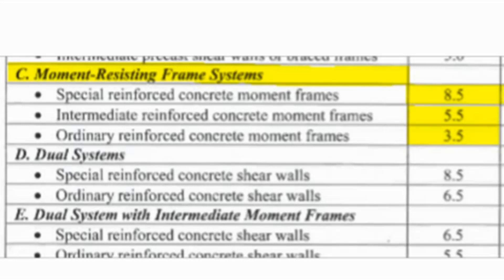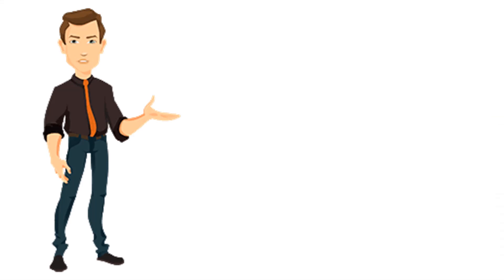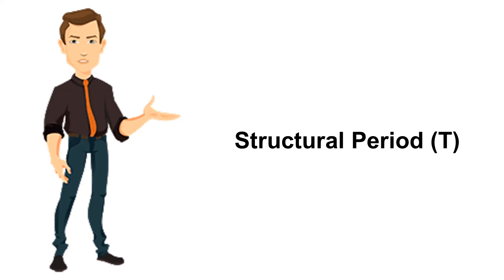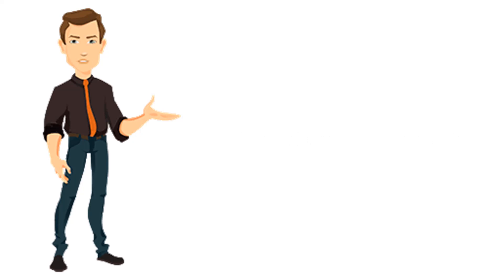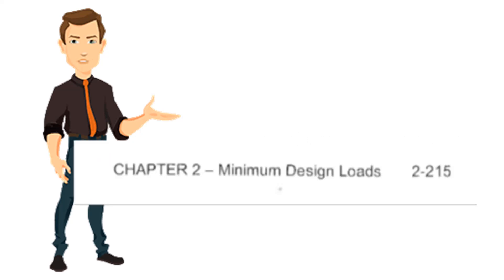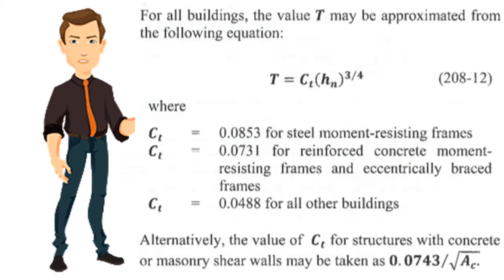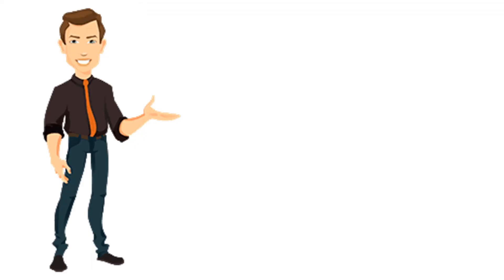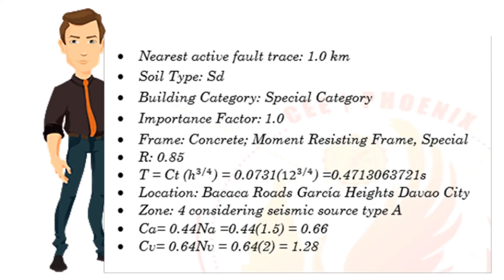Lastly, identify the elastic fundamental period of vibration T in the direction under consideration. The formula is found in Chapter 2, page 215, Method A: T = Ct × hn^(3/4), where Ct values are given in the code and hn is the height of the structure.